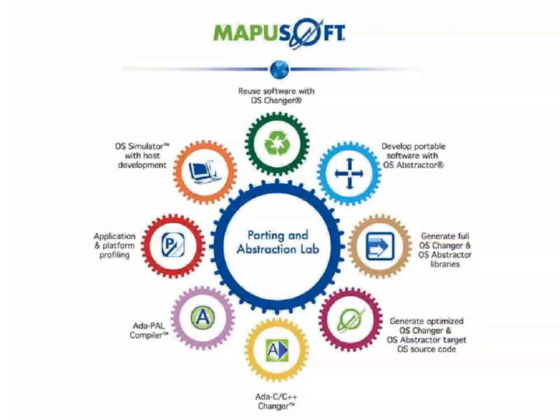ADA C, C++ Changer, shown in the yellow gear on the bottom center of the diagram, automatically converts ADA code to the C, C++ language. The resultant C, C++ code can be integrated with OS Abstractor for real-time performance, portability, and stability. ADA PAL compiler, shown in the purple gear on the bottom left, allows you to compile your ADA code and integrate with a cross-C, C++ compiler to generate binaries from a wide variety of CPU architectures.